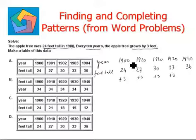So we have the year and the feet tall table, and let's see which option it is matching. This is matching to option D. Here, the years are added by 10 every time, and the height of the tree is added by 3 feet every time. So D is the correct answer.